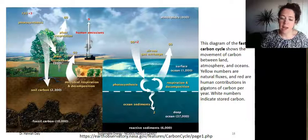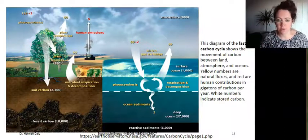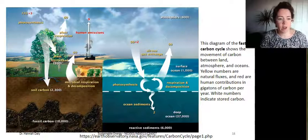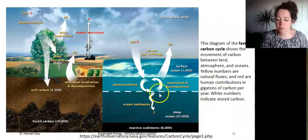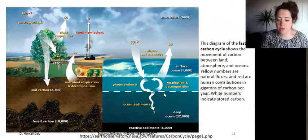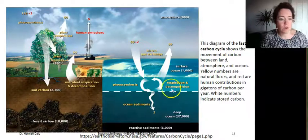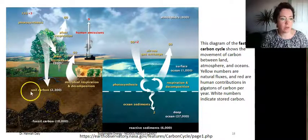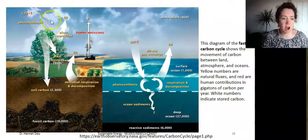Changes that put carbon gases into the atmosphere cause the greenhouse effect. This diagram is the fast carbon cycle and shows the movement of carbon between land, atmosphere, and oceans. The yellow numbers are natural fluxes. For example, here we have photosynthesis, which extracts carbon from the atmosphere.